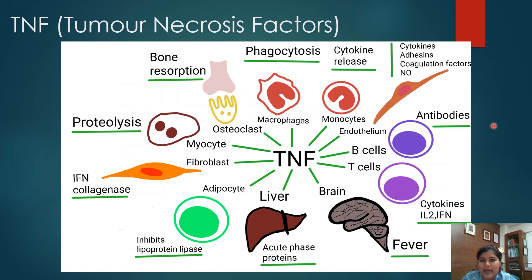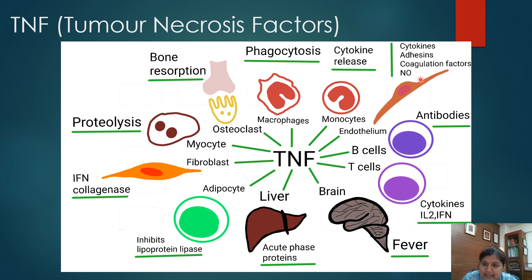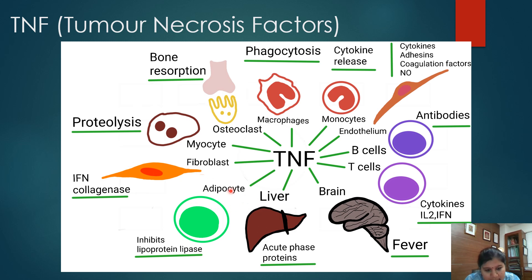The next cytokine is tumor necrosis factor. TNF has been associated with various organs and functions. In macrophages it stimulates phagocytosis; in monocytes it stimulates cytokine release; in the endothelium it stimulates production of cytokines, adhesins, coagulation factors, and nitric oxide, favouring vasodilation and a pro-coagulable state. In B cells it stimulates antibody production; in T cells it stimulates cytokines such as interleukin 2 and interferons. It also stimulates fever and sleep via the brain, produces acute phase reactants via the liver, inhibits lipoprotein lipase in adipocytes, stimulates collagenase in fibroblasts, causes proteolysis in myocytes, and favours bone resorption via osteoclasts.